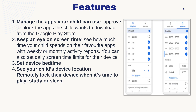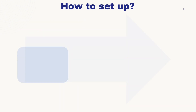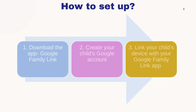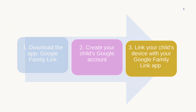You can keep track of your child's device location, and lastly, you can lock their device when their screen time is up. It is very easy to set up Google Family Link — just follow three steps: download the app, create a Google account for your child, and link it to the Google Family Link app.